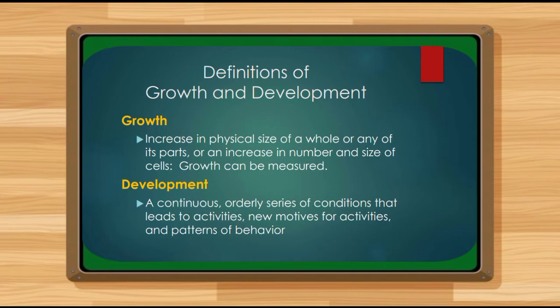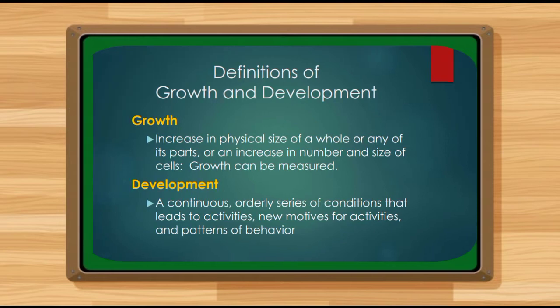Development is a continuous, orderly series of conditions that leads to activities, new motives for activities, and patterns of behavior. Unlike growth, development cannot be measured. Anything that happens to us in terms of a series of conditions that leads to activities — like the different skills in reading and writing, knowing how to walk when we were a child — those things refer to development. Again, development cannot be measured, unlike growth.